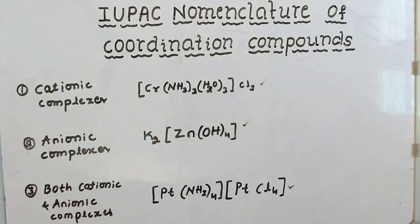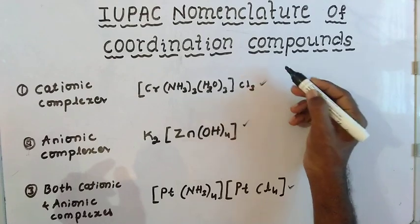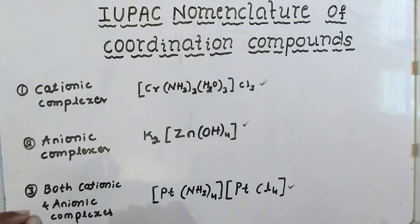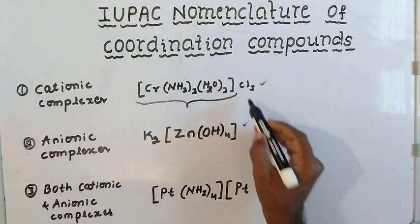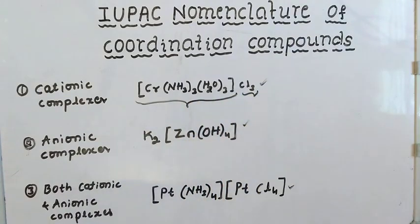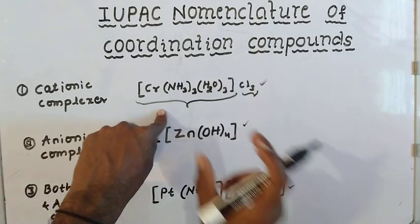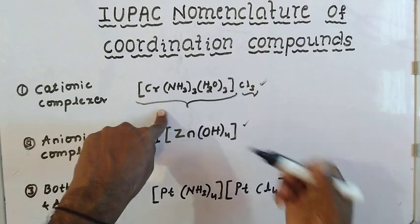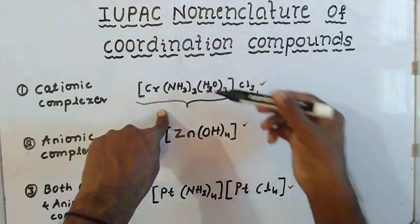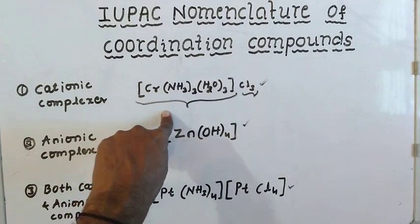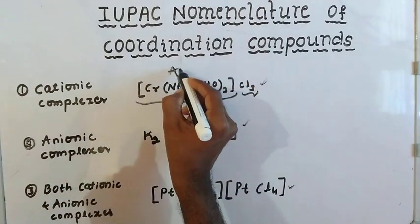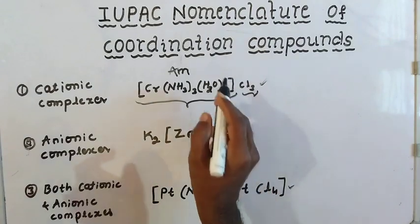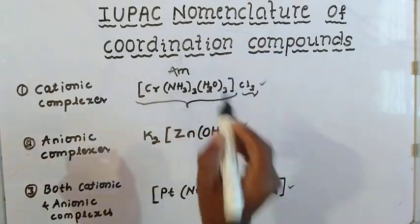Let's start naming. First, we have a cationic complex. There is more than one type of ligand, so we check the alphabetical order. We have amine and water molecules. Water is named aqua.